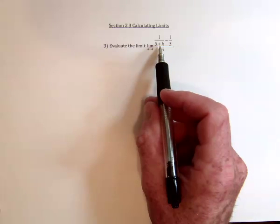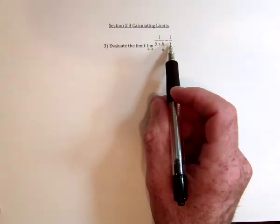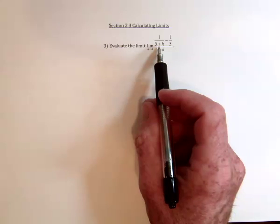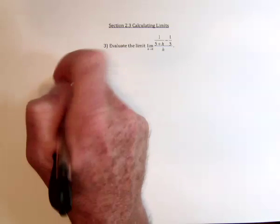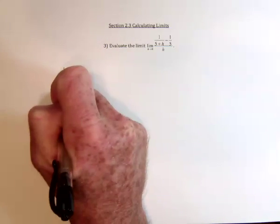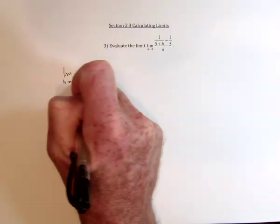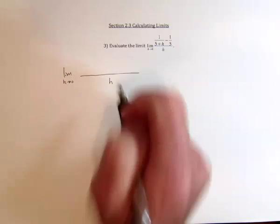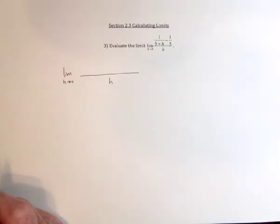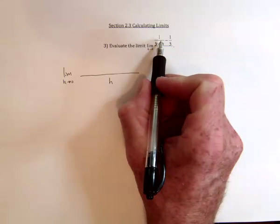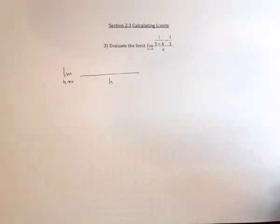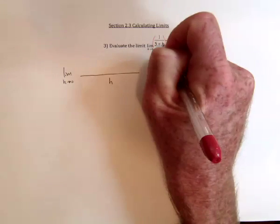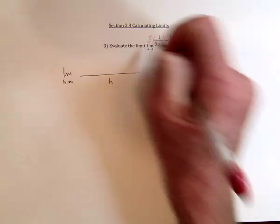So over here, the least common denominator for these two is going to be 5 multiplied with (5 plus h). So we've got plenty of space for the numerator now. We've got this fraction that needs to be multiplied by 5 over 5.